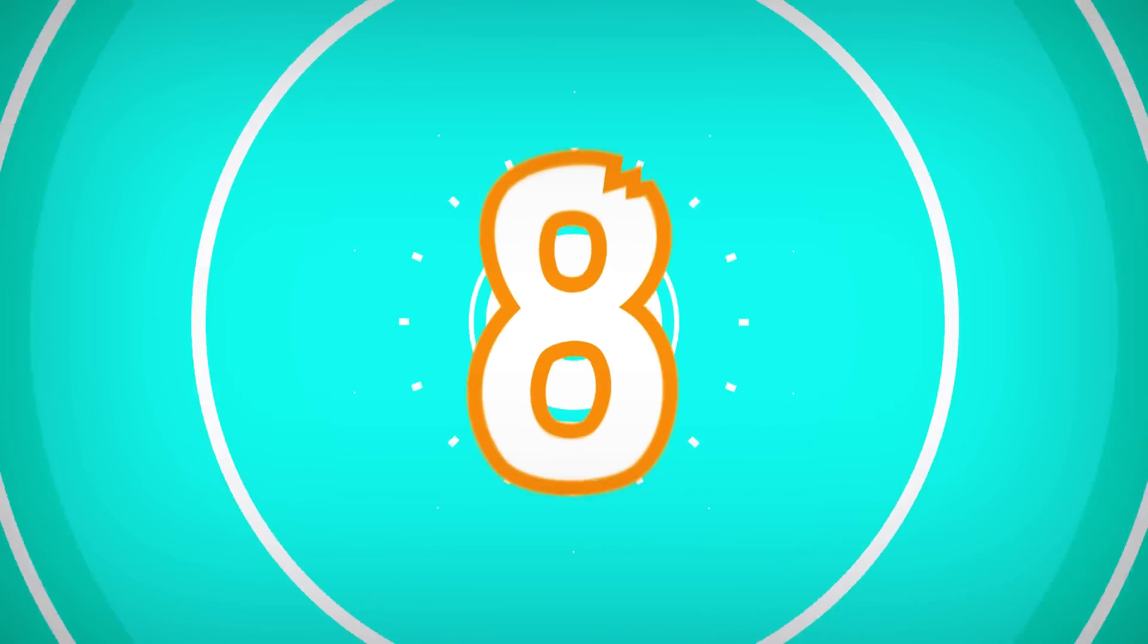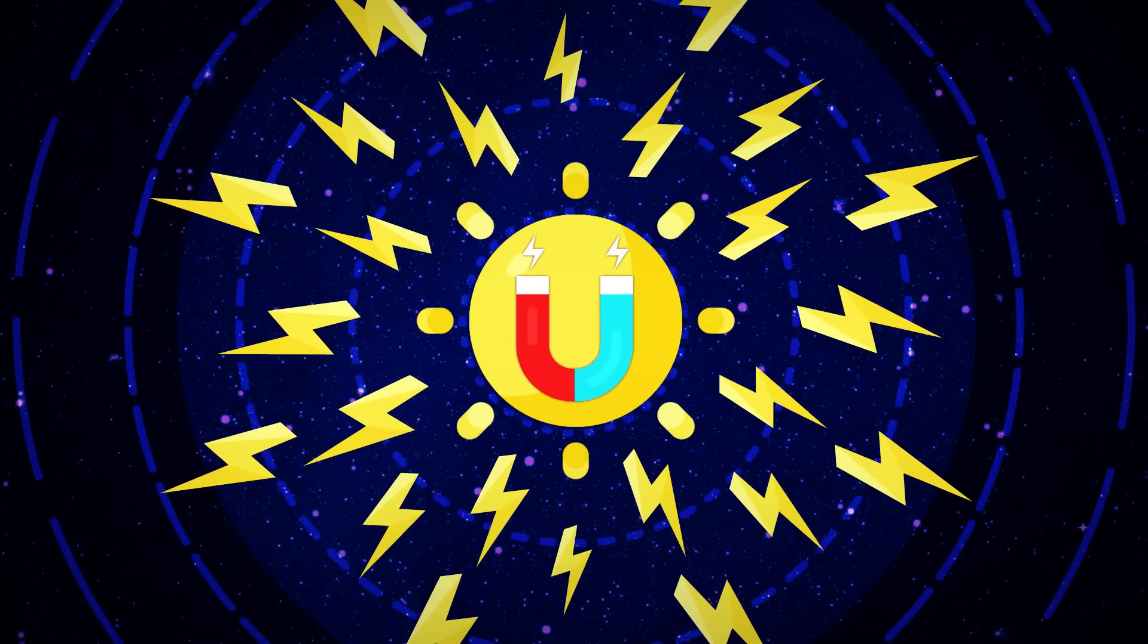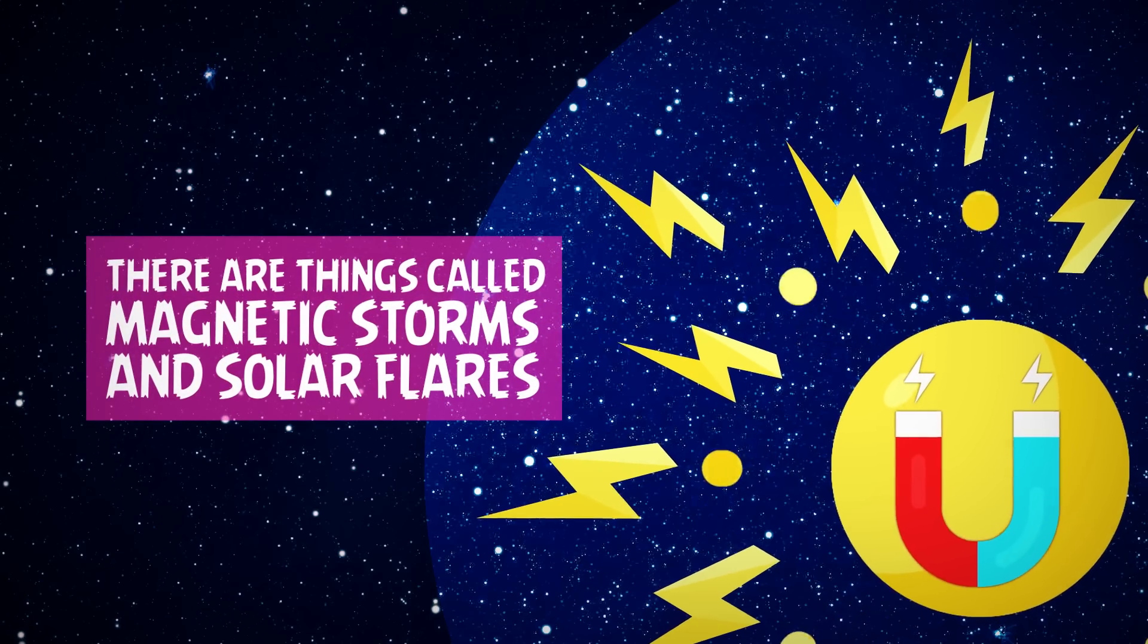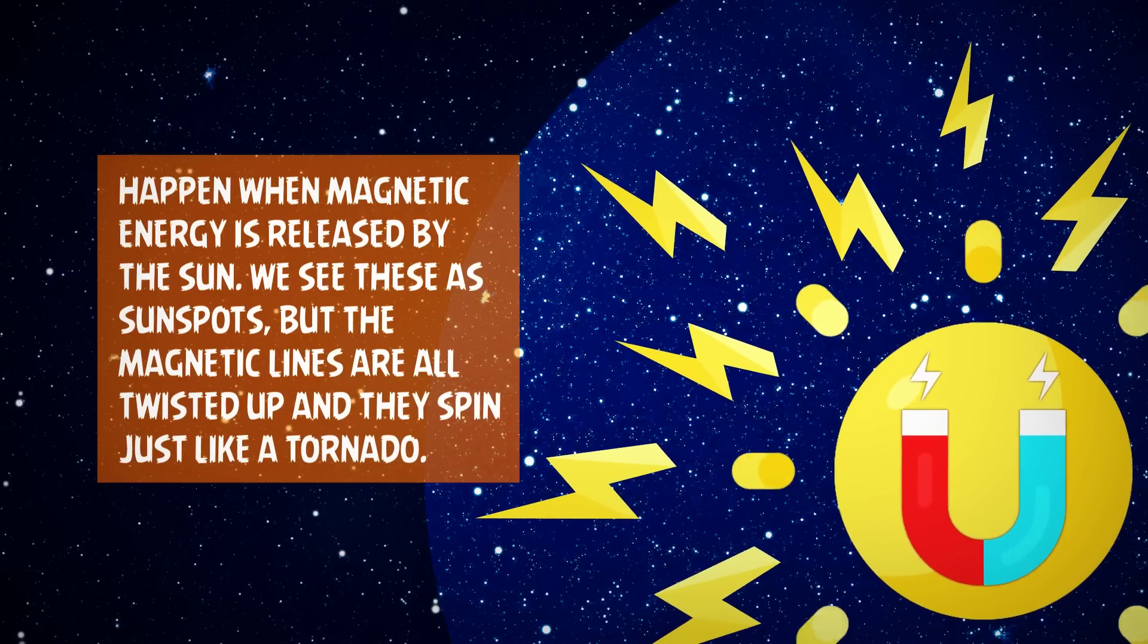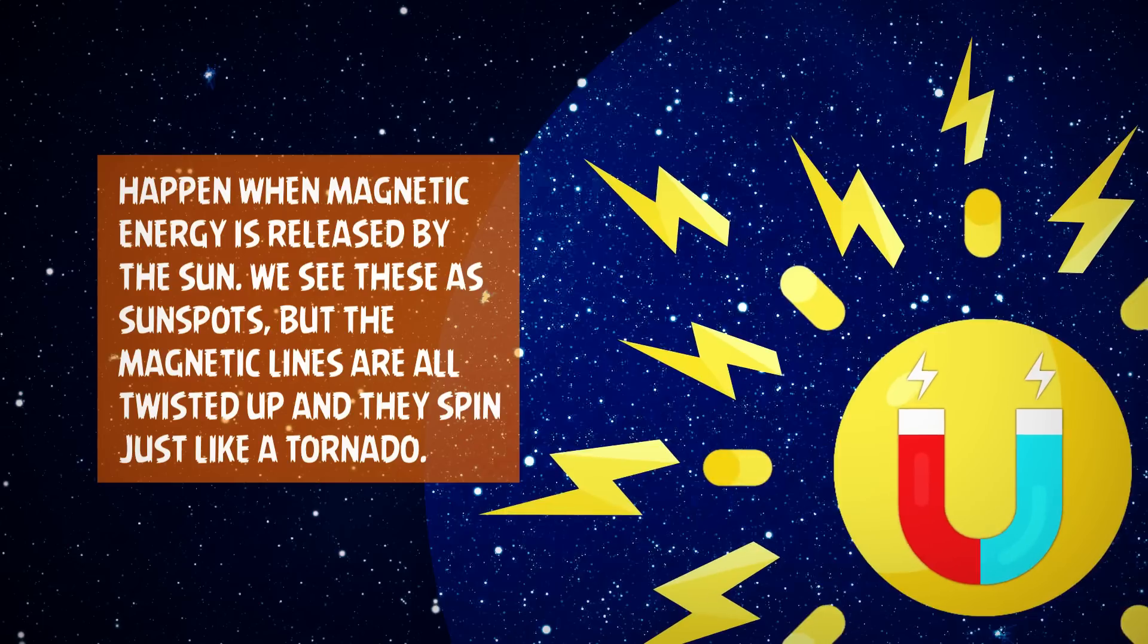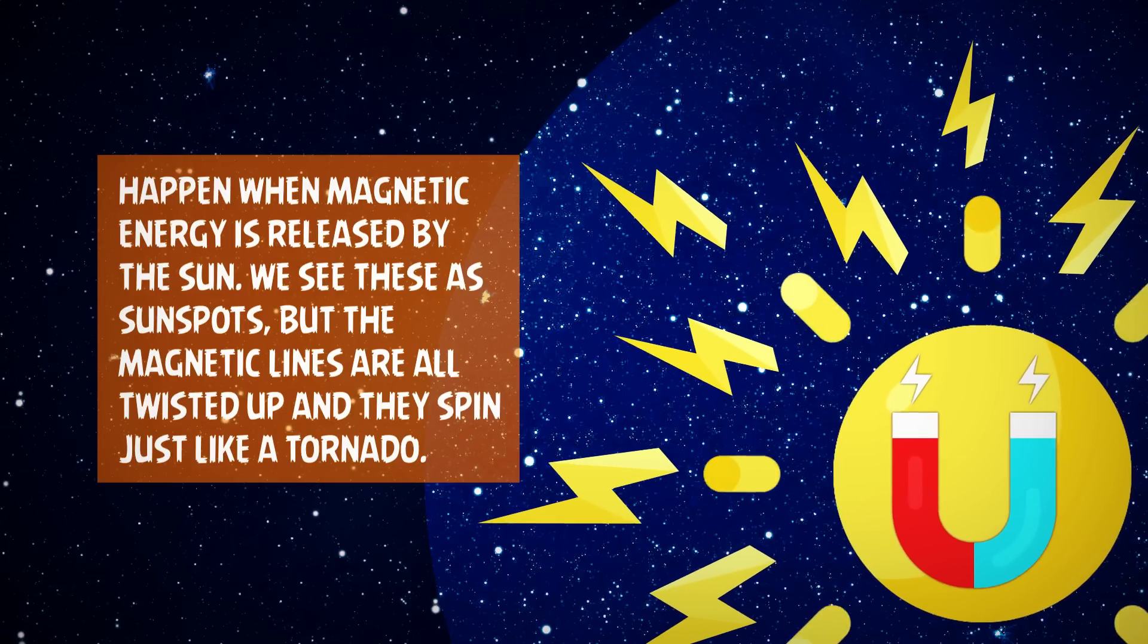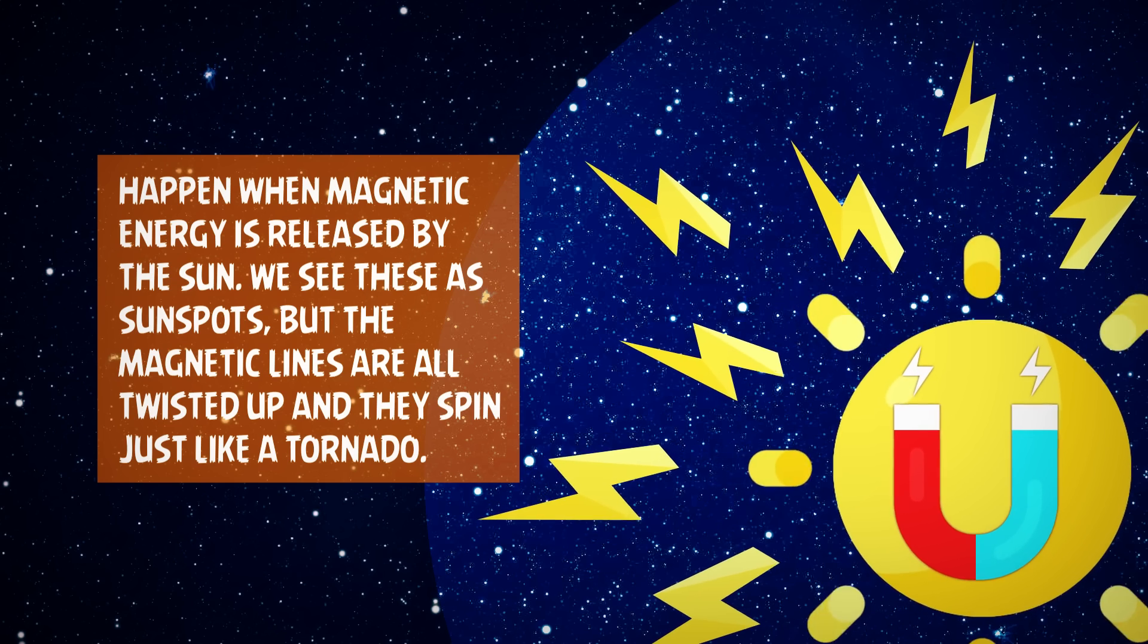Number 8. Did you know the sun has a very strong magnetic field? There are things called magnetic storms and solar flares that happen when the magnetic energy is released by the sun. We see these as sun spots, but the magnetic lines are all twisted up and they spin just like a tornado.